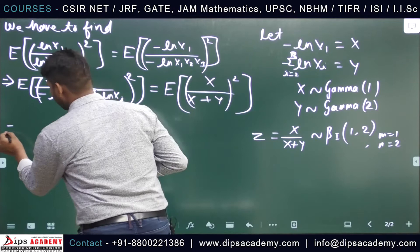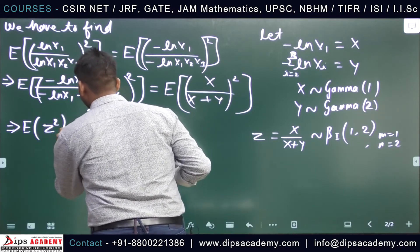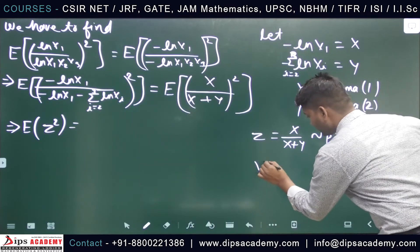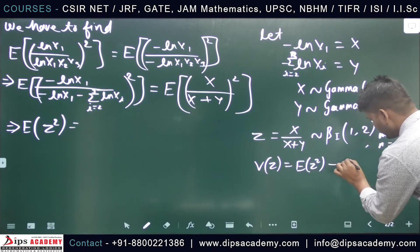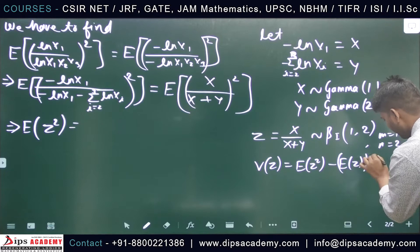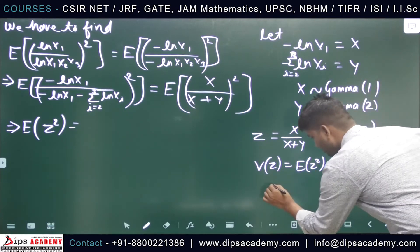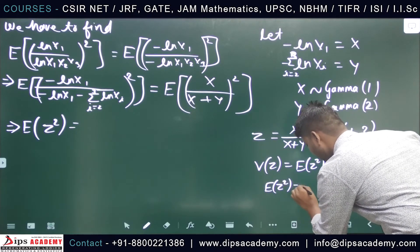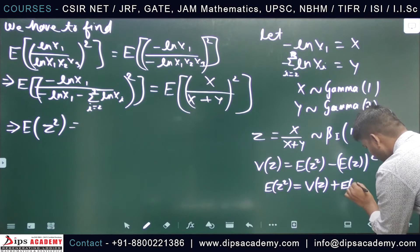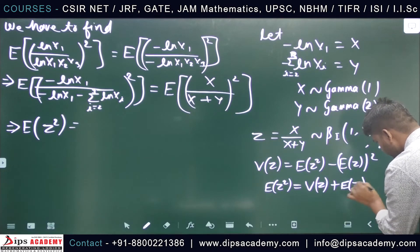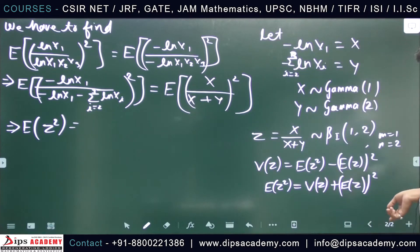We know that Var(Z) equals E[Z²] minus (E[Z])², so we can write E[Z²] equals Var(Z) plus (E[Z])². We will use the known formulas for the mean and variance of a Beta distribution to find this.